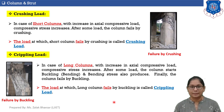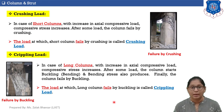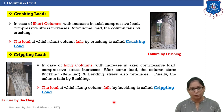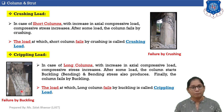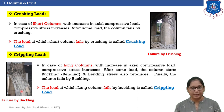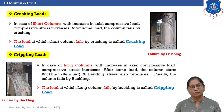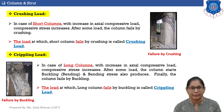In the case of long columns, with increase in axial compressive load, compressive stresses increase and after some load the column starts buckling or bending, generating bending stresses as well. Finally the column fails by buckling. The load at which a column fails by buckling is called the crippling load.